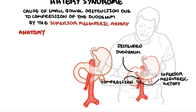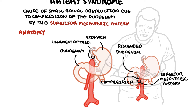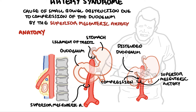Let's revise some anatomy. Here we have the stomach and the duodenum, the first part of the small intestine, which is held by the ligament of Treitz. The superior mesenteric artery arises from the anterior aspect of the aorta at the level of the L1 vertebral body.